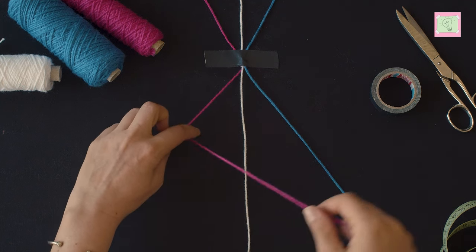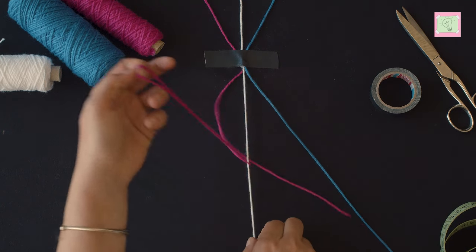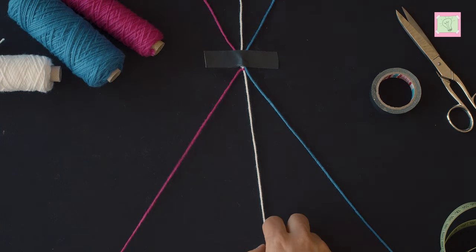With the thread on the left, place a 4 over the middle thread, go into the opening from the bottom, and tighten the knot. Then put the thread back to the left.